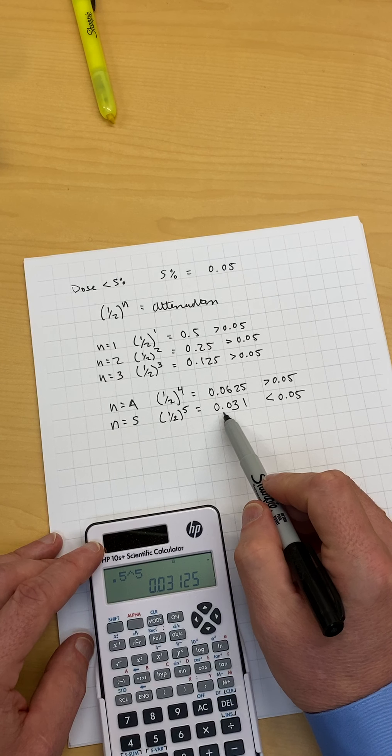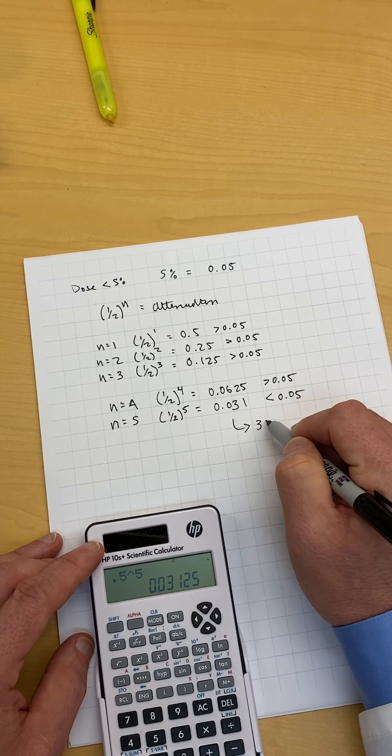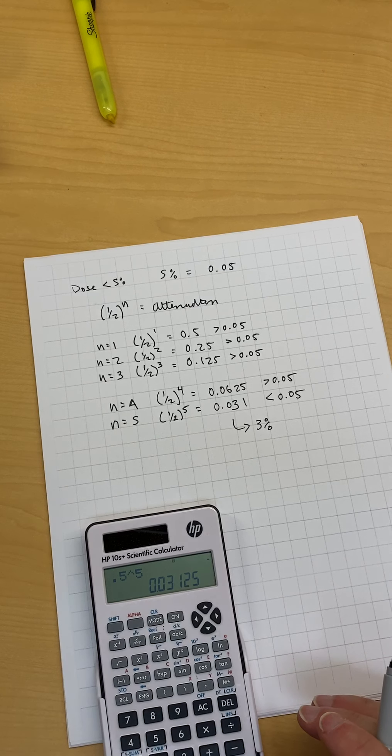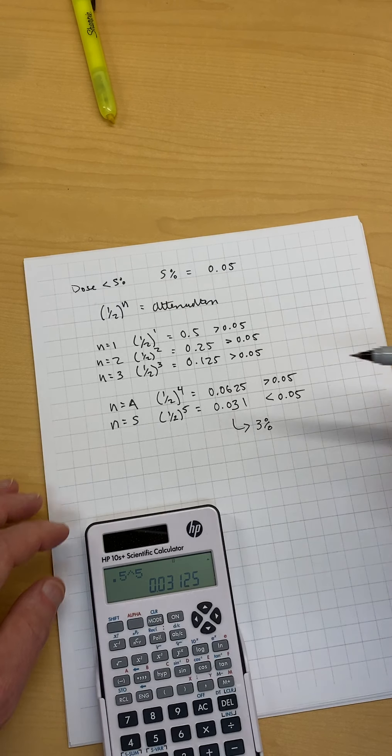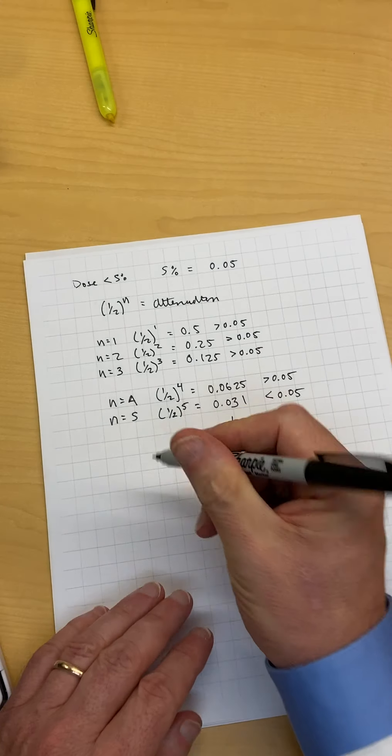So five half value layers is going to attenuate the beam down to 0.031, which is the same as three percent. If we multiply that by a hundred, we'll get three percent. So we need at least five half value layers to get it. We need five HVLs.